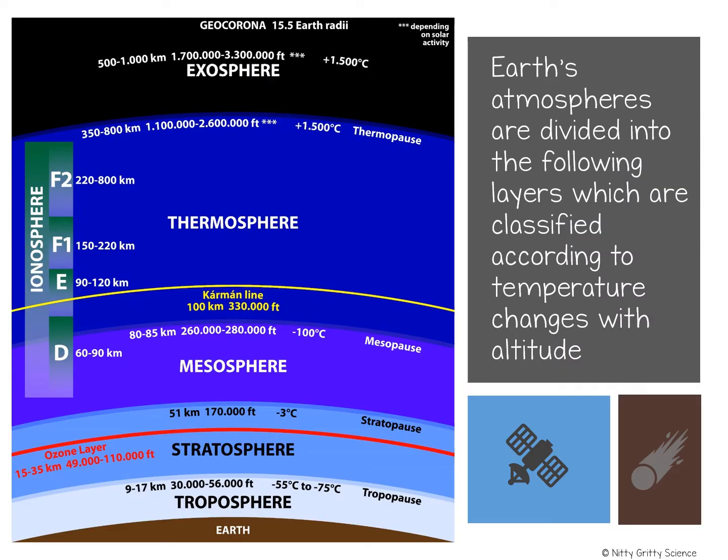Scientists are able to have weather balloons go up through the atmosphere to check on conditions. If you were to follow that balloon, you would go through four main layers of the atmosphere, which are classified according to changes in temperature. These layers are the troposphere, the stratosphere, the mesosphere, and the thermosphere. There are also sub-layers, which we're going to discuss in just a bit.